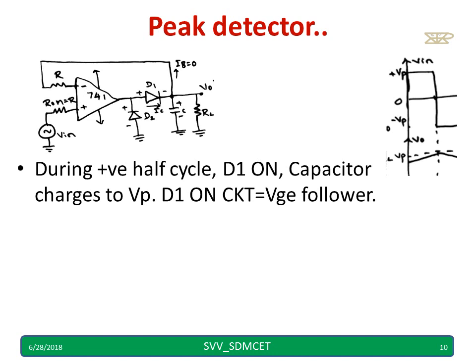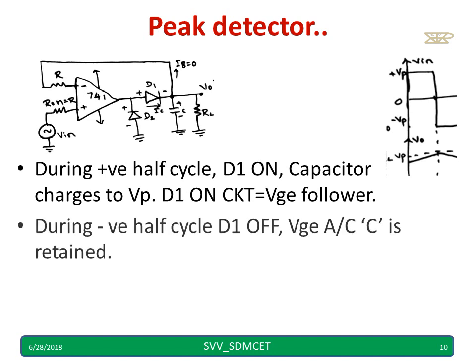During the positive half cycle, D1 is on and the capacitor charges to the peak voltage of whatever input you are applying. During the negative half cycle, D1 is off.